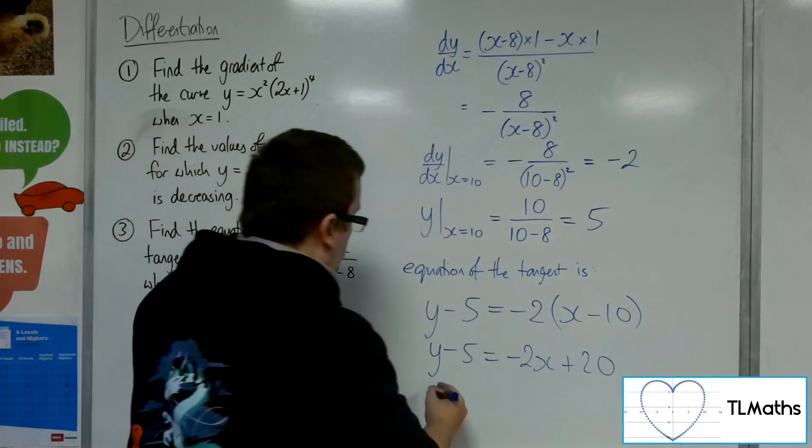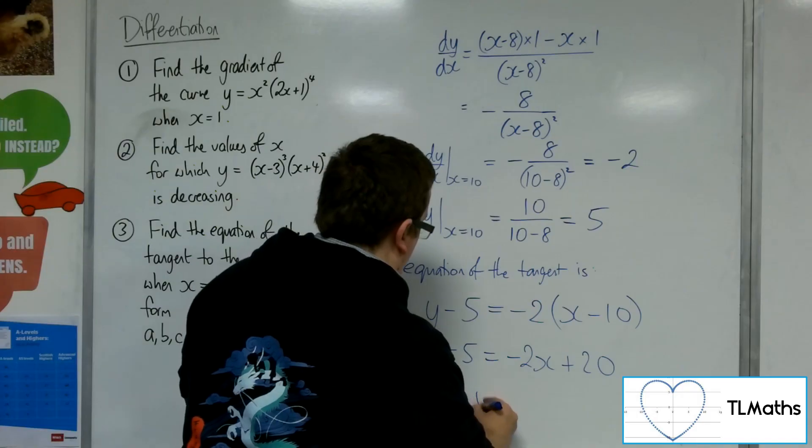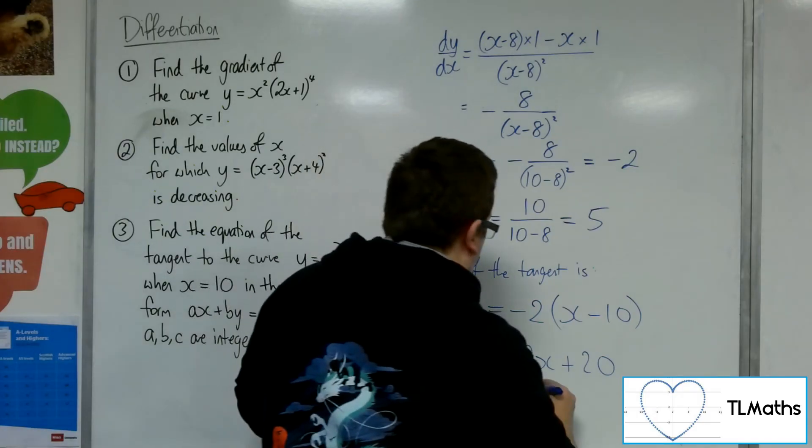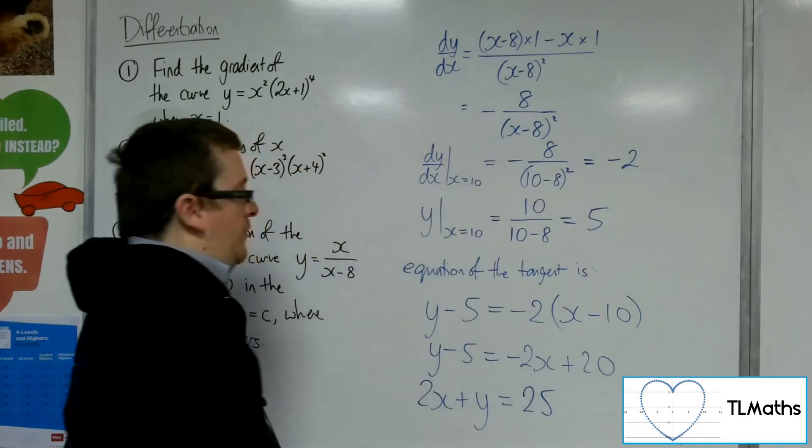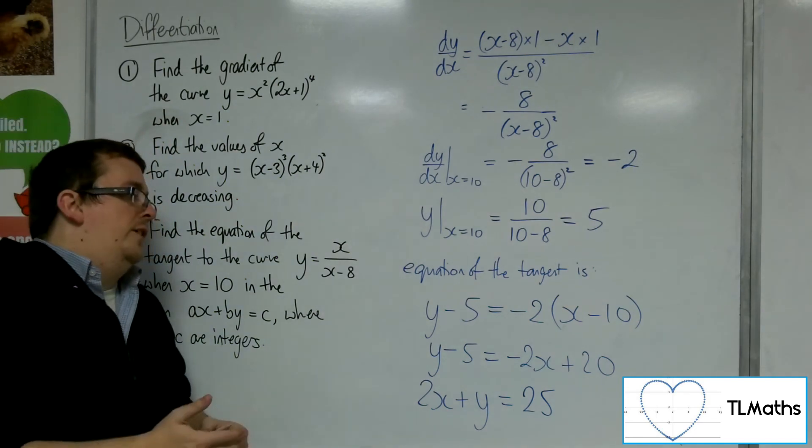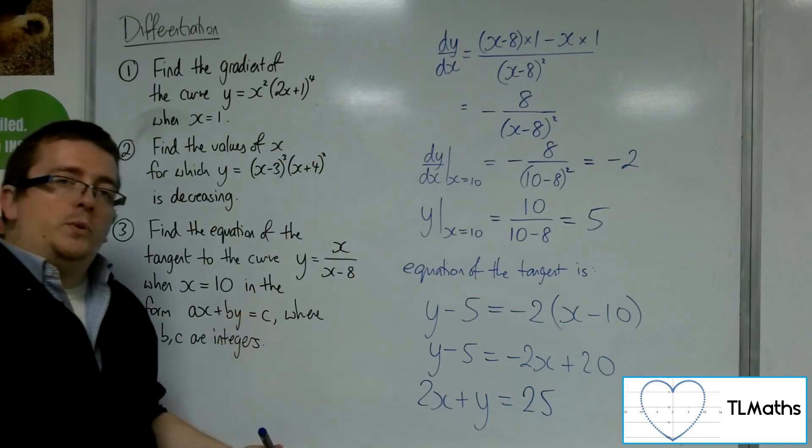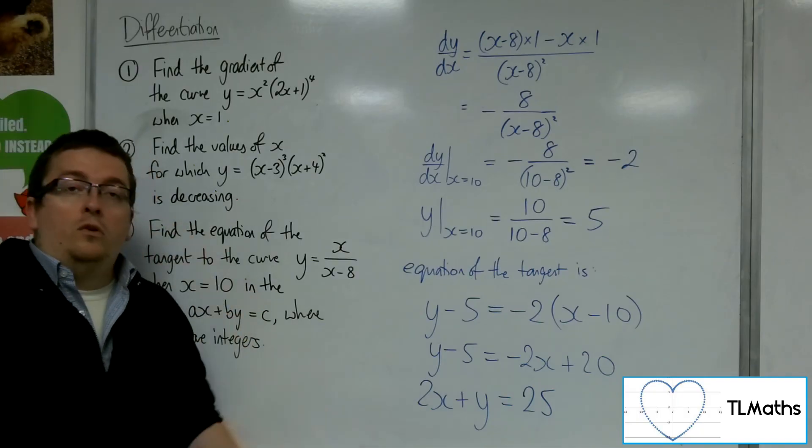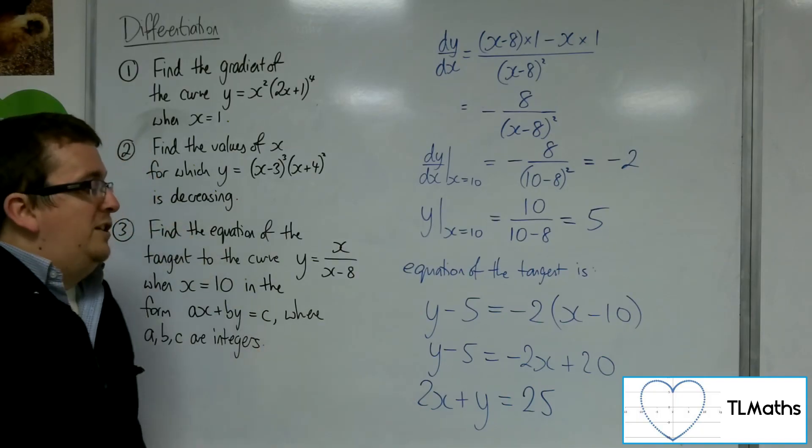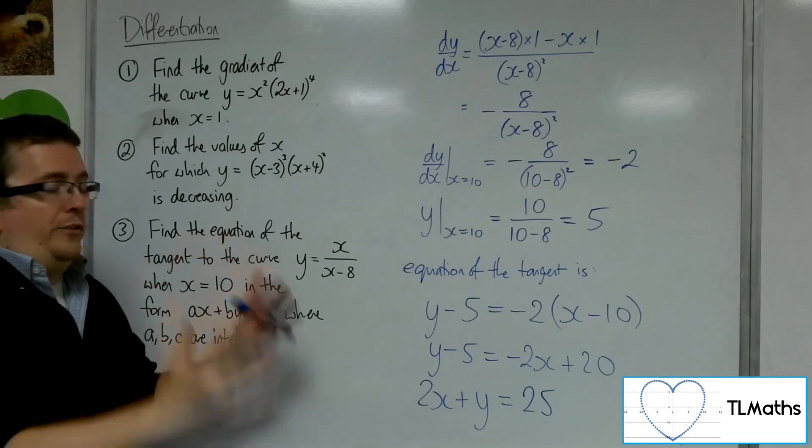Now if I add the 2x onto the left-hand side, add the 5 onto the other side, we have it in the format that we wanted. 2x plus y equals 25. An equivalent answer would be minus 2x minus y equals minus 25. Either or. But this one obviously looks nice there, because you could just multiply both sides by minus 1.